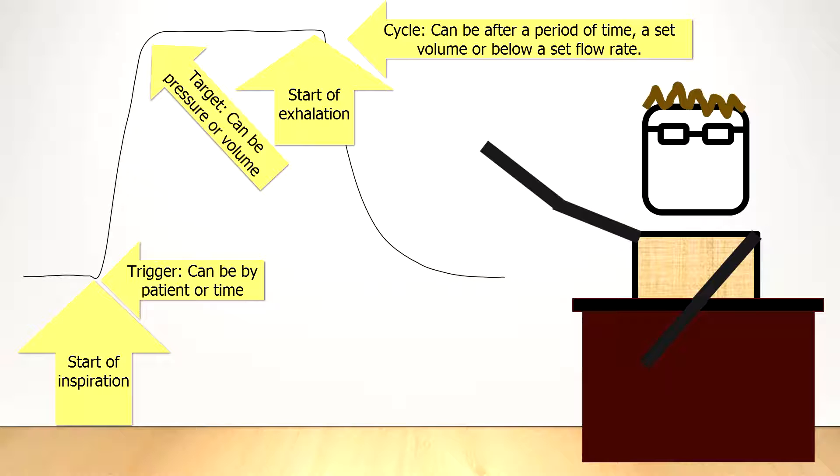When pressure was the controlled variable and the target, the cycling occurs after a set period of time, regardless of the amount of volume of air delivered.